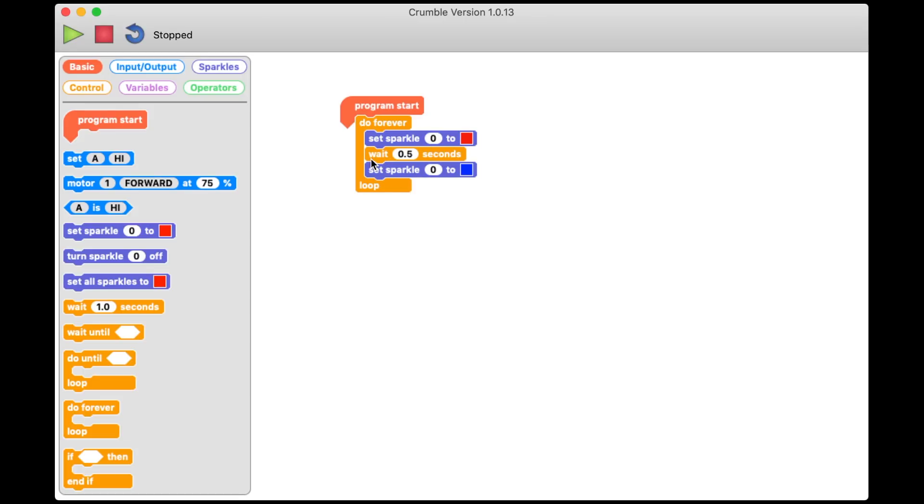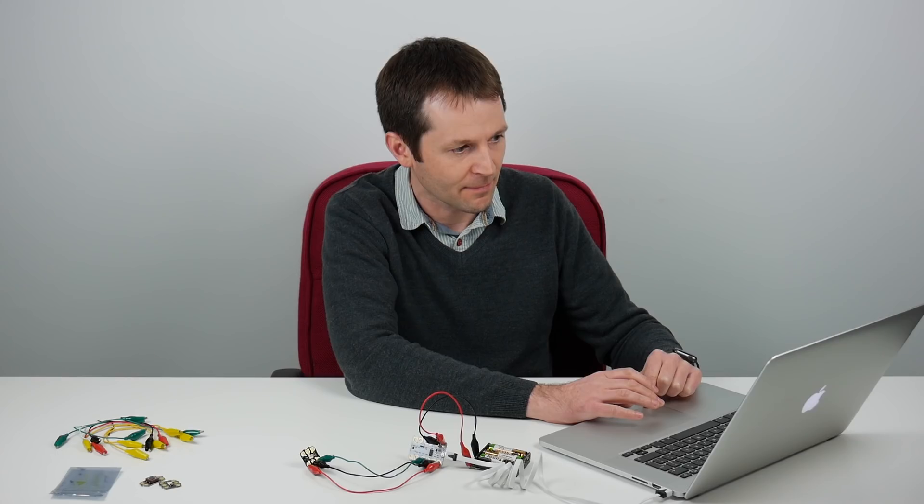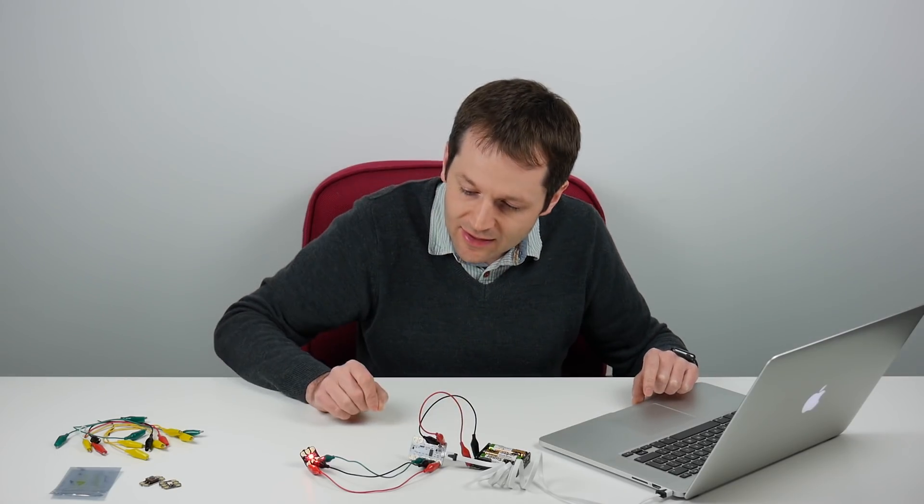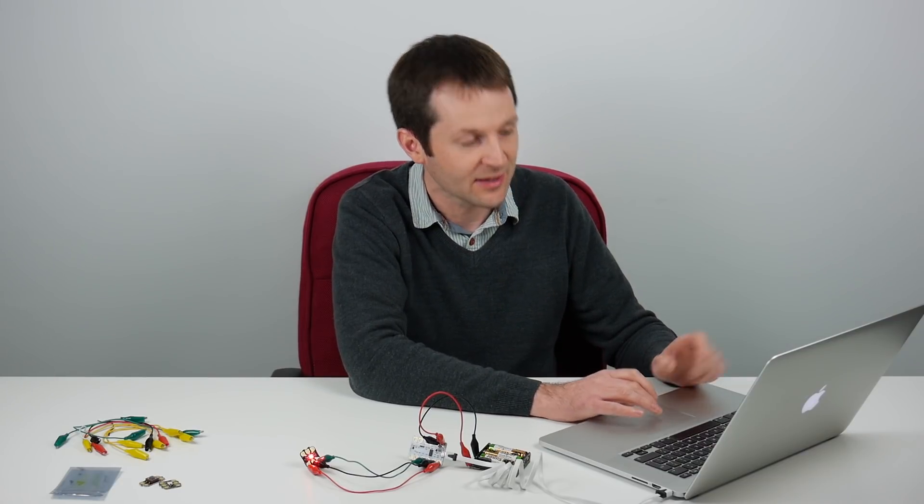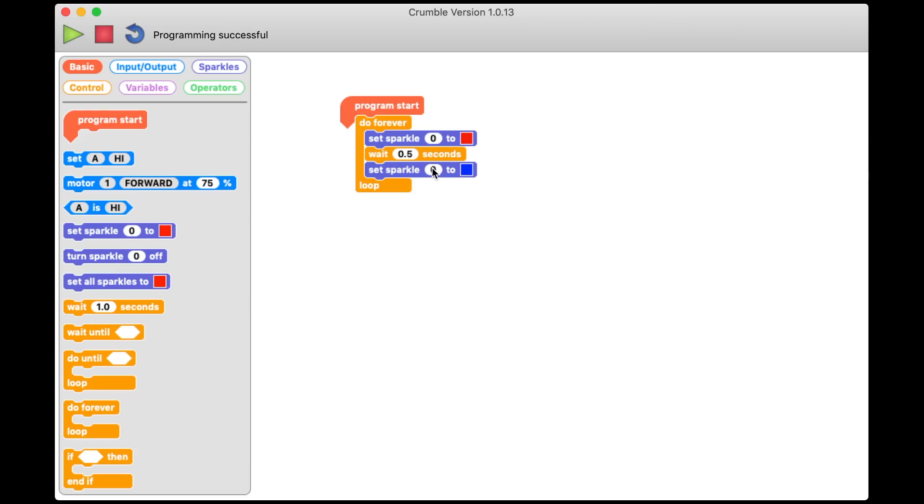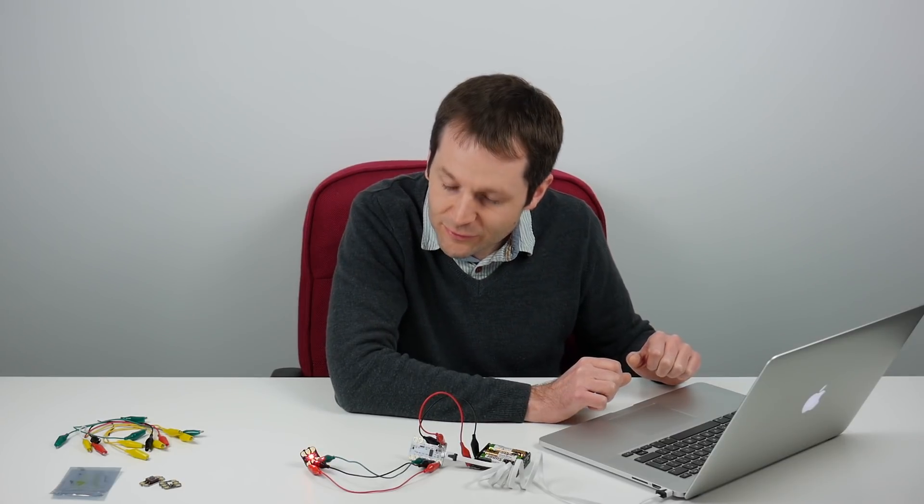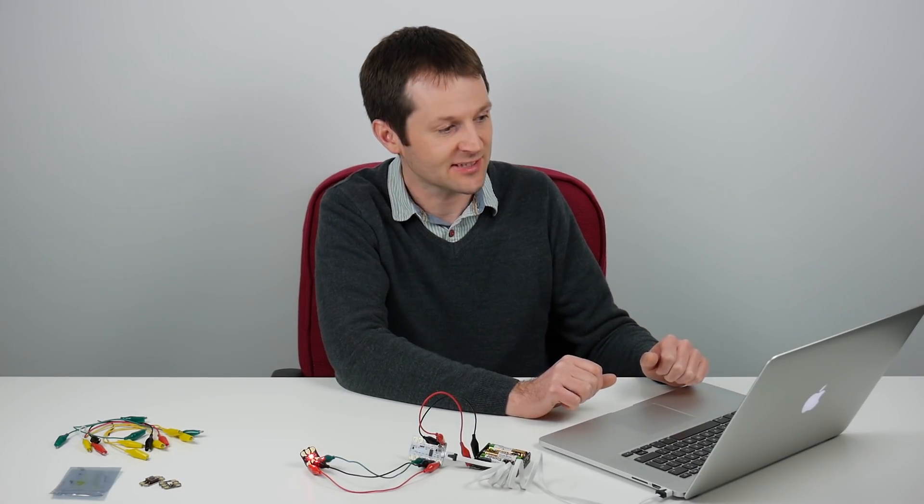Now there's a little problem with my program. If I run it now we can see that it's staying red and what's actually happening is setting it red, waiting half a second, setting it blue but then immediately going back to the top of the loop and setting it red again. So we just need to add in one more block, half a second wait again. And if I run that now we've got our flashing red and blue light. It's that simple.